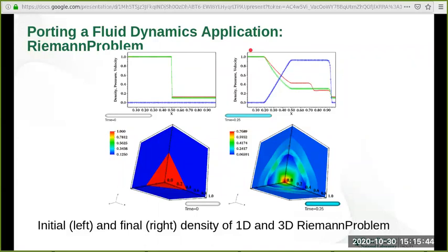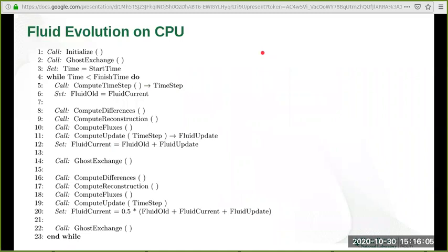In the initial state, a high-density, high-pressure gas is separated by a membrane which is removed at time t equals 0. As the gas evolves, shock waves form moving to the right. In this plot, blue is the velocity, red is the pressure, and green is the density of the fluid.